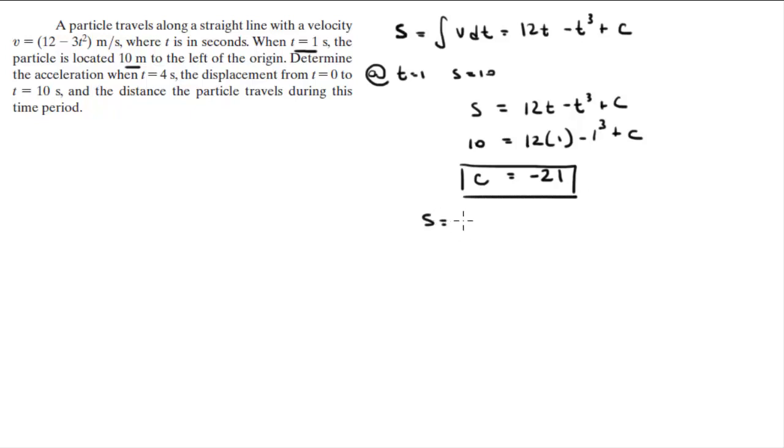So the formula for the position is 12t minus t cubed minus 21.